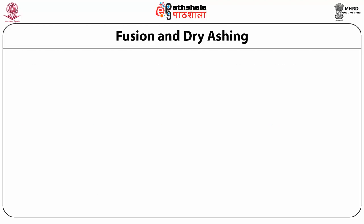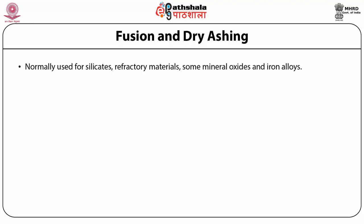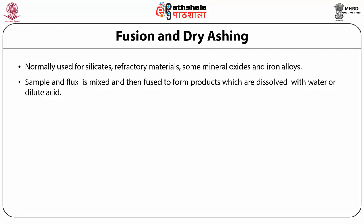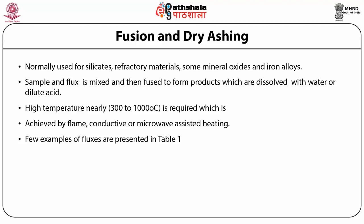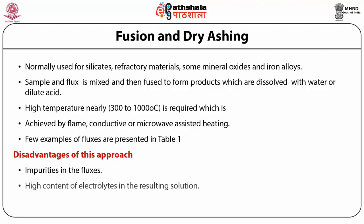Fusion and dry ashing is normally used for silicates, refractory materials, other mineral oxides, and iron alloys. In this technique, the sample and flux are mixed and then heated to form products which are dissolved in water or dilute acid. The temperature is roughly 300 to 1000 degrees centigrade, achieved by flame, conductive heating, or microwave-assisted heating. The disadvantage is that the fluxes used may introduce impurities into the sample, they result in high content of electrolytes in the resulting solutions, and there is loss by volatilization.